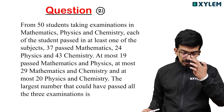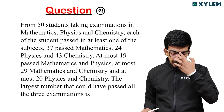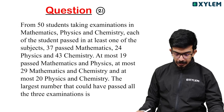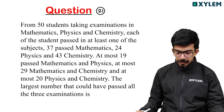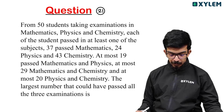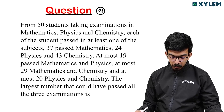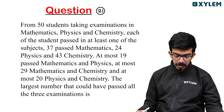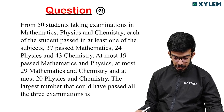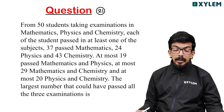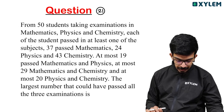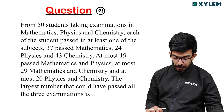Next question. From 50 students taking examinations in mathematics, physics and chemistry, each of the students passed in at least one of the subjects. 37 passed mathematics, 24 physics, 43 chemistry. At most 19 passed mathematics and physics, at most 29 mathematics and chemistry, and at most 20 physics and chemistry. The largest number that could have passed all three examinations is what we need to find.